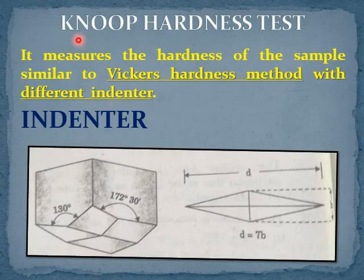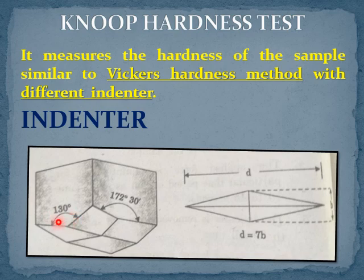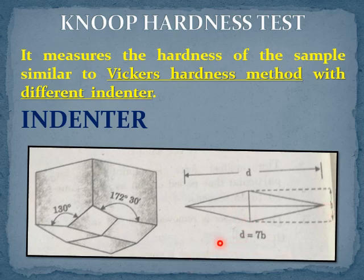The second micro hardness testing method is the Knoop hardness test. The method is very similar to the Vickers hardness method except a different indenter is used. The indenter is diamond pyramidal in shape. The angle formed in the transverse direction is 130 degrees, whereas the angle formed in the longitudinal direction is 172 degrees 30 minutes (172.5 degrees). When the base forms an impression, it is similar to a rhombus shape where the longitudinal diagonal d is nearly 7 times greater than the transverse diagonal b, i.e., d = 7b.